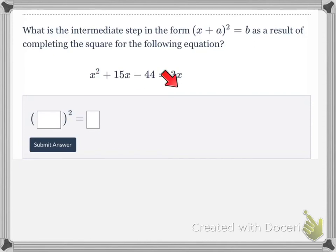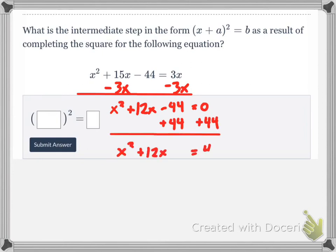So again, you have to rewrite this so that all the x's are on one side of the equation and then the constant is on the other. So first thing I'm going to do is I'm going to subtract 3x from both sides so it gets everything on the left side of the equation, and it's all going to be equal to 0. Negative 3, uh, 3x minus 3x is 0, and then I'm going to add 44 to both sides. And now I have the form that I need to complete the square. So x squared plus 12x equals 44.